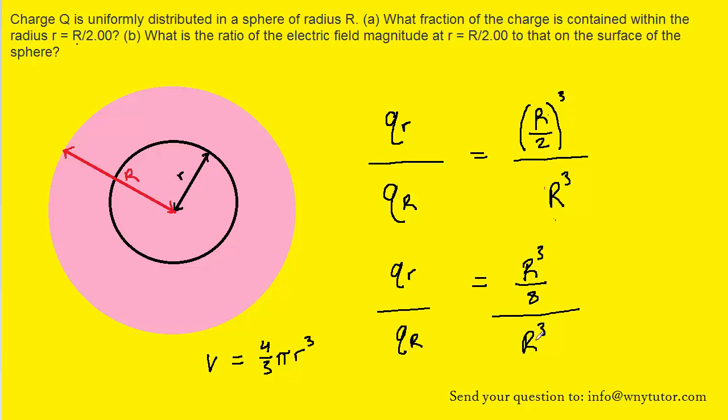And then we can simplify the right-hand side further. We're basically taking a fraction and dividing it by another fraction if we put a 1 over there. And we know that when we divide fractions, we do something called keep-change-flip. So we're going to keep the first fraction the same, we'll change the division to multiplication, and then we'll flip the second fraction around to make 1 over R cubed. We can see there that the R cubes will cancel out, leaving us with 1 eighth.